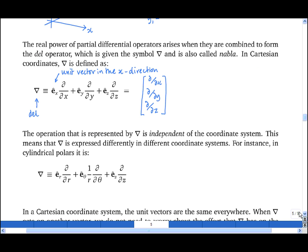For example, in cylindrical polars, it is the unit vector in the r direction, the radial direction, times d by dr, plus the unit vector in the theta direction, times 1 upon r d by d theta, plus the unit vector in the z direction, times d by dz.